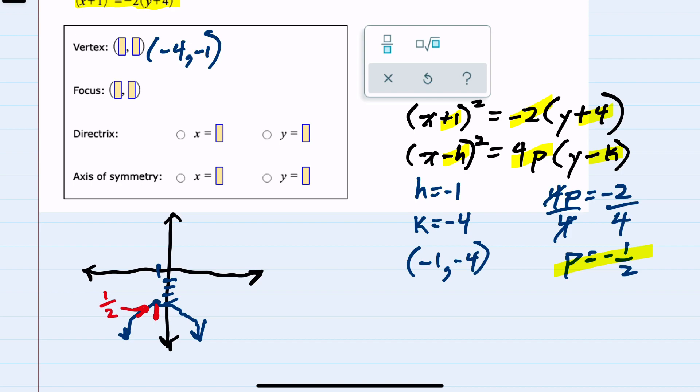And if I took our vertex and move down half a unit, then my focus will be negative 1, negative 4 and a half. So we have found the focus, negative 1, negative 4 and a half, or negative 9 halves.